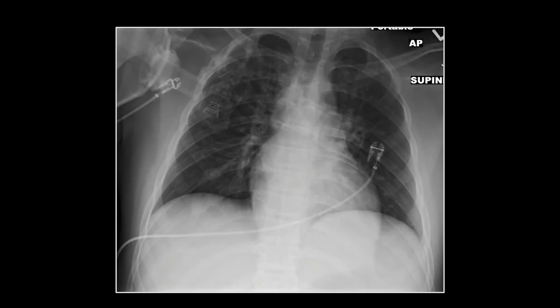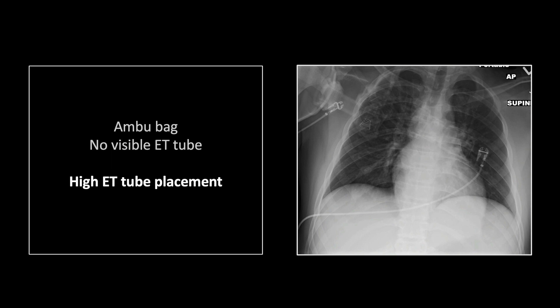We'll begin with this case of an absent endotracheal tube. This case came across with a clinical history of code, and importantly, our radiologist noted the presence of an AMBU bag. A ventilation bag can be attached to a mask as easily as to a tube, but in the setting of a code, one of the fundamental primary events is endotracheal intubation. So when you see an emergent chest x-ray in that setting, it is wise to look for an endotracheal tube, and if you don't see one, to contact the clinical team and ascertain whether or not they believe one is present.